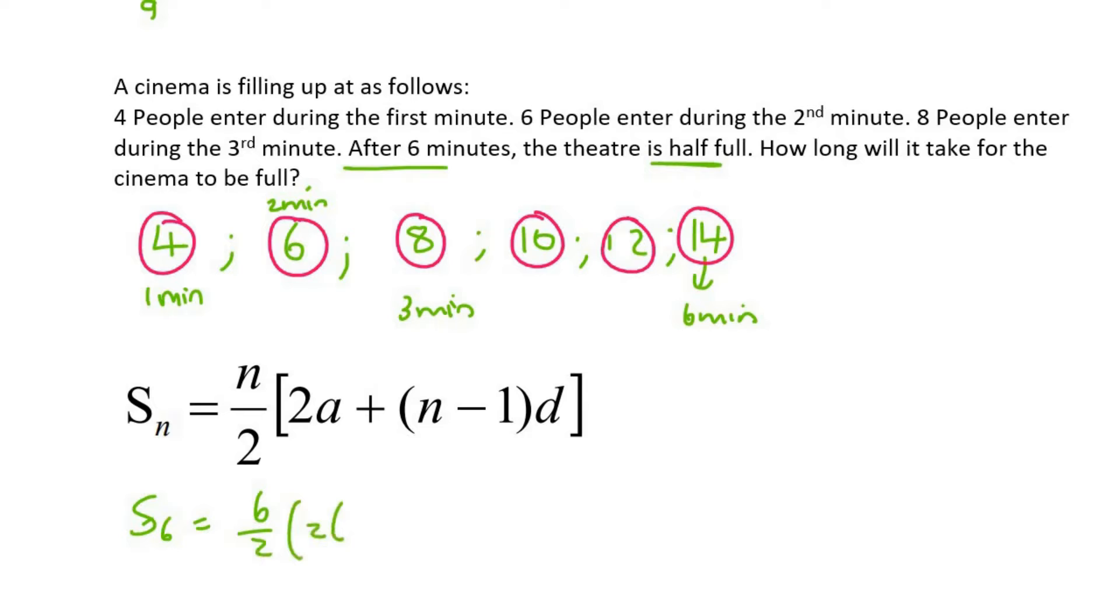Now, a is your first term, which is four, and the common difference is two. So we can work that out. As I said, you could have just added them yourself - it's probably faster, but I'm just being fancy. And that's 54. So there are 54 people who have entered during six minutes.